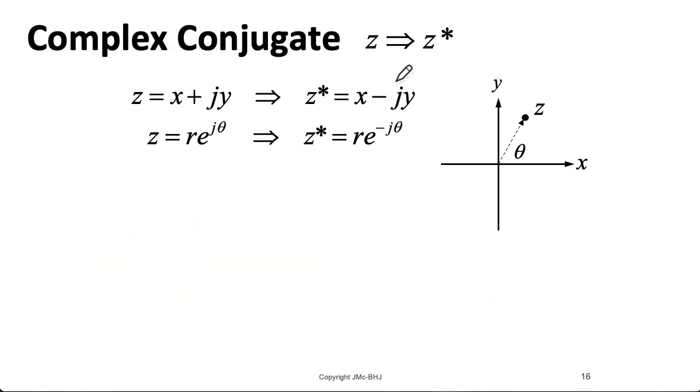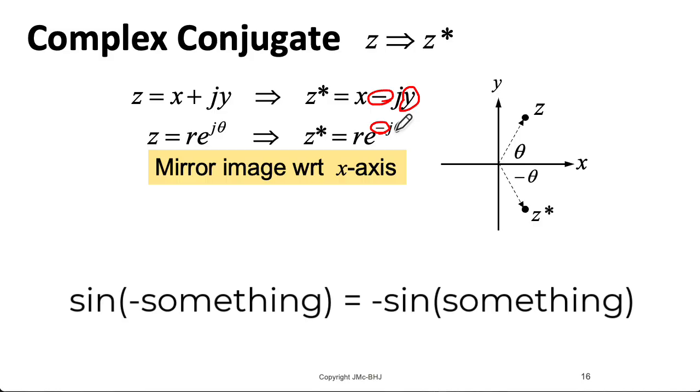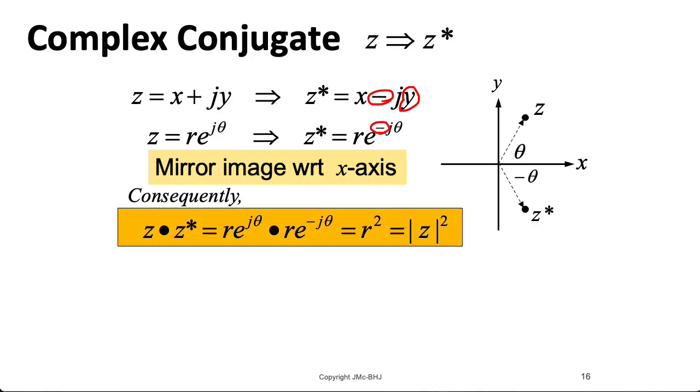Complex conjugation is an operation we're going to use a lot. We represent it using the superscript asterisk. It involves taking the imaginary component and flipping the sign on it. That mirrors it along the horizontal axis. And if you think about what the angle looks like here, you can see that this corresponds to flipping the sign on the angle in polar form. And that's also immediately obvious if you remember the trigonometric identity, that sine of minus something equals minus sine something. We'll quite often take a complex number and multiply it by its complex conjugate, because that's often a convenient way to compute the magnitude squared of a complex number.